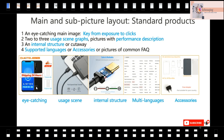Then you need two or three usage scene images — for example, showing that a cable can charge a phone, a MacBook, etc. altogether. You can also show the internal structure, especially for cables, because it demonstrates the quality of your product. You can also include a cutaway view. For electronics products, it is better to have a multi-language display, because your buyers are from overseas and should see their language. Also include accessories, etc. This is a good display layout for standard products such as electronics.